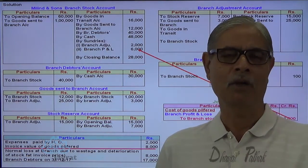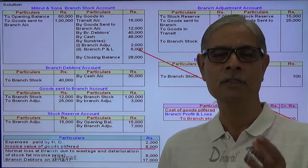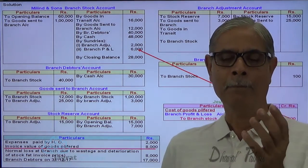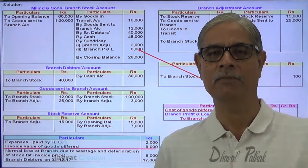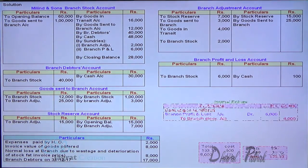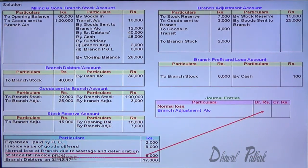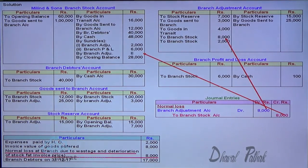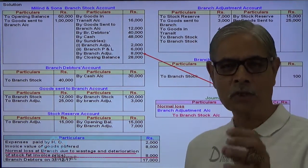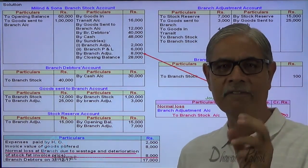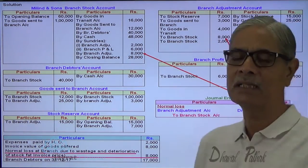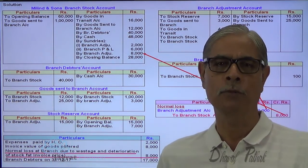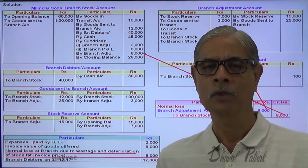In case of normal loss, profit and loss account is not debited. The normal loss is reflected through the matching concept in the gross profit — normal loss reduces the gross profit. For the normal loss of 8,000: entry is branch adjustment account debit, branch stock account credit. Both the profit element and the cost element — the total invoice price — are debited to the branch adjustment account. This is the key distinction for accounting of abnormal loss versus normal loss under the stock and debtors system.